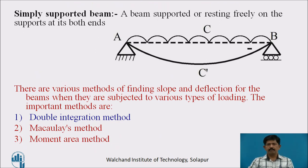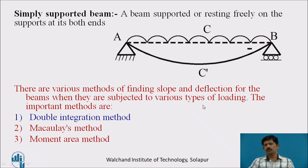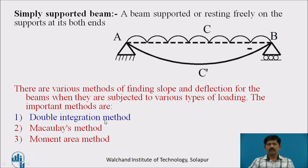A beam supported or resting freely on the supports at both its ends is called a simply supported beam. There are various methods of finding slope and deflection for beams subjected to various loads. The important ones are the double integration method, Macaulay's method, and moment area method. We are dealing with the double integration method.